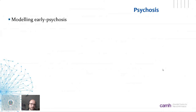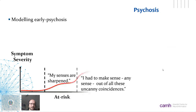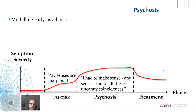When modeling early psychosis, it's worthwhile to look at how symptoms develop over time. In many patients, the psychotic episode is preceded by an at-risk phase characterized by symptoms that are not as severe or as long in duration — for example, hallucinations occurring less frequently, or bizarre ideas that the person is not entirely convinced of. This is then followed by treatment and may reoccur after relapse.